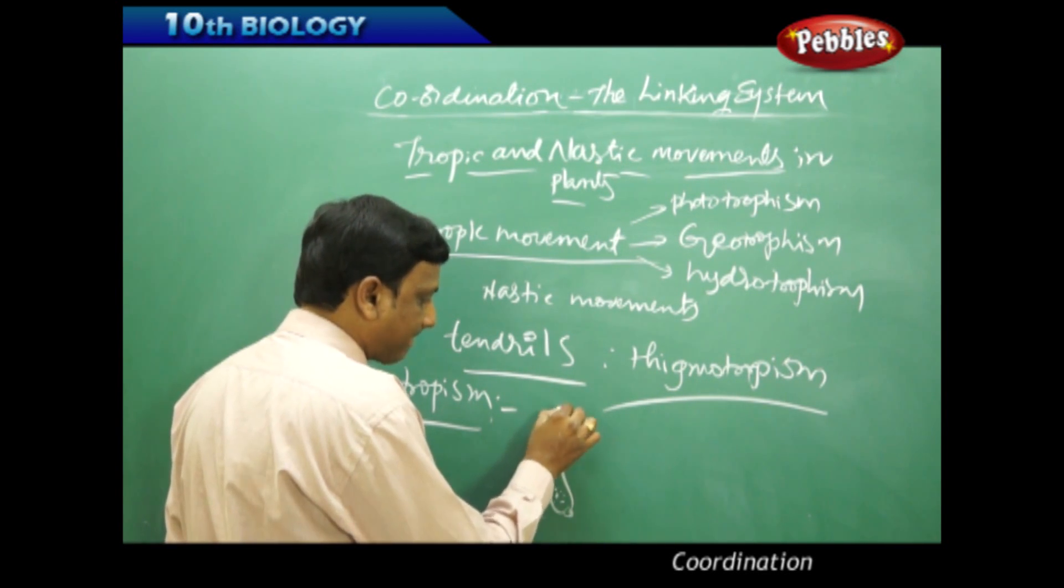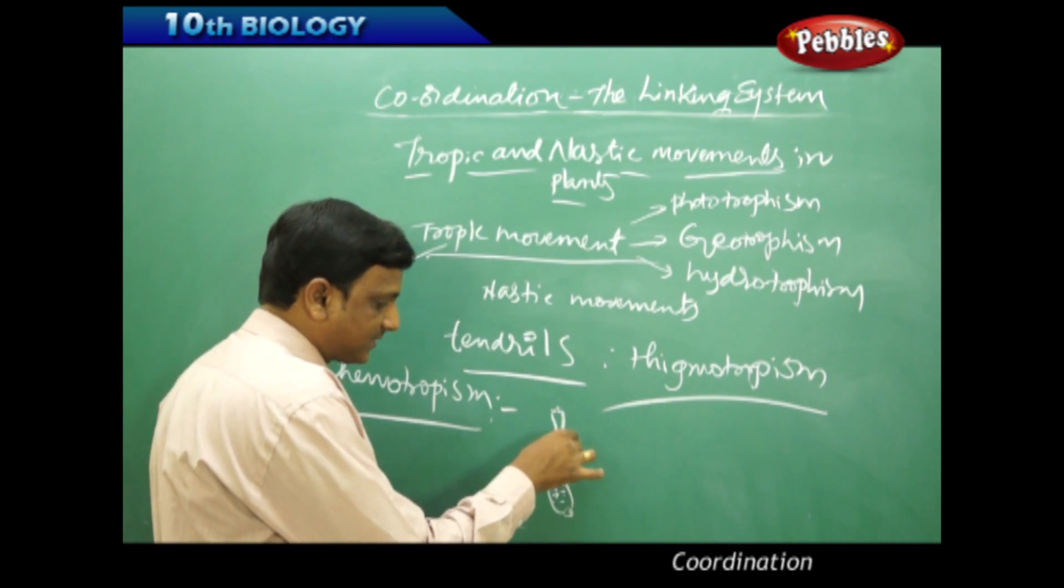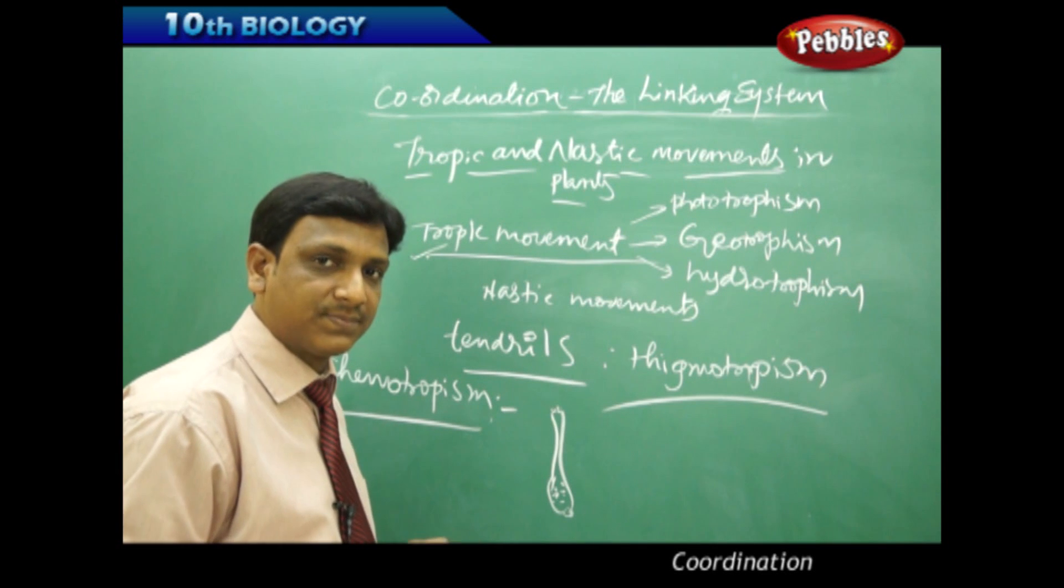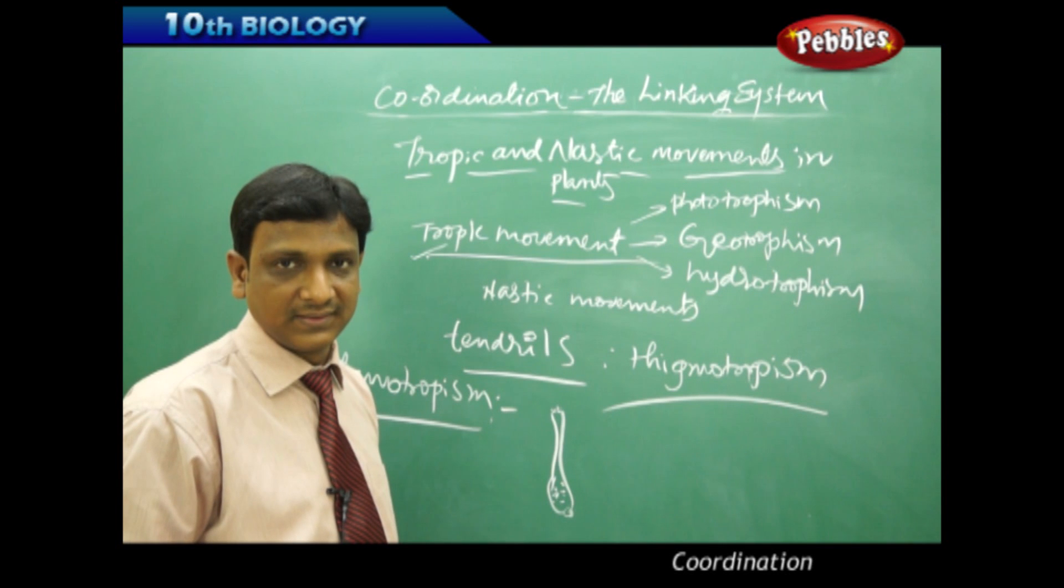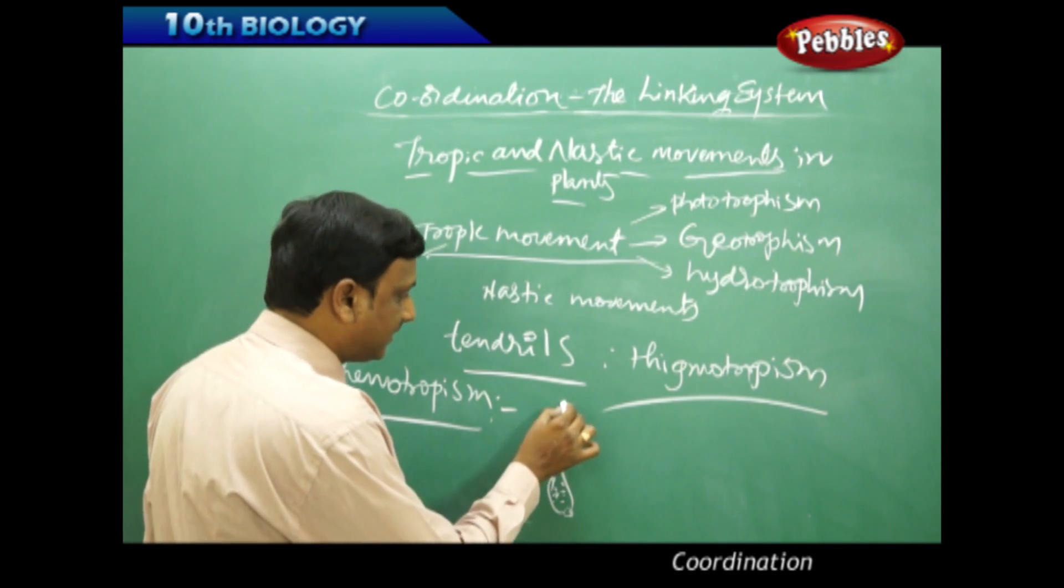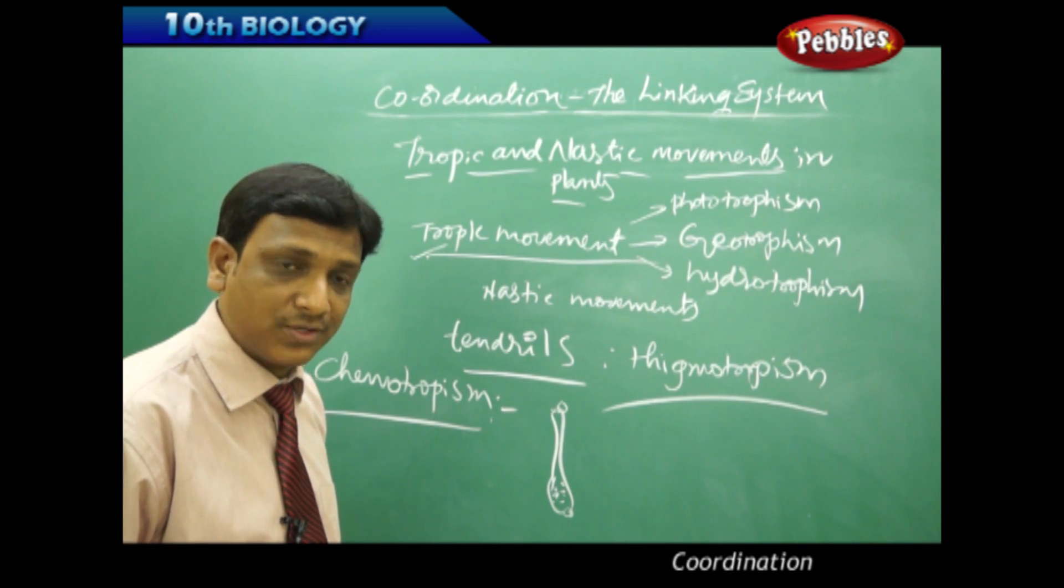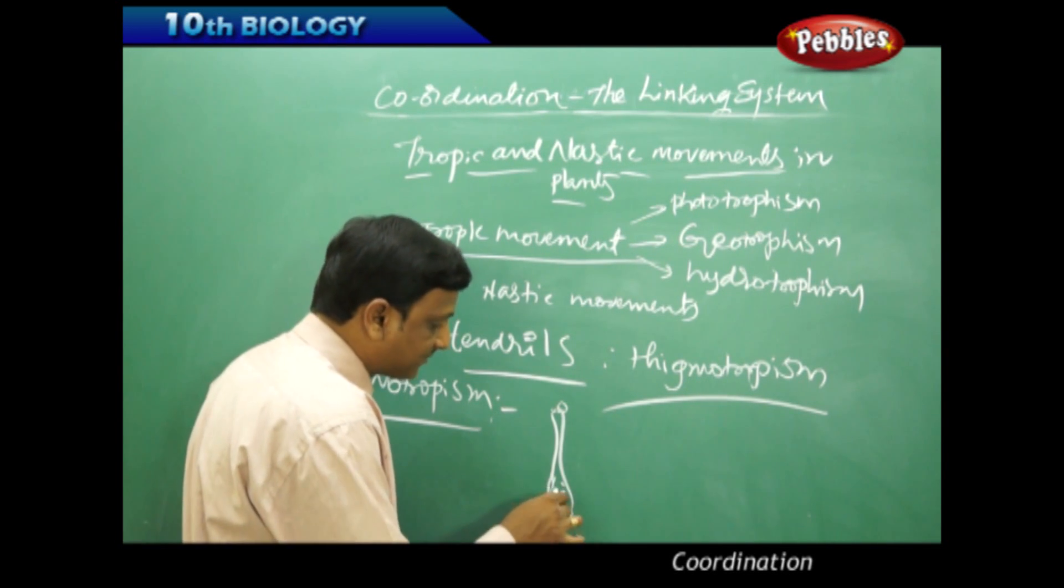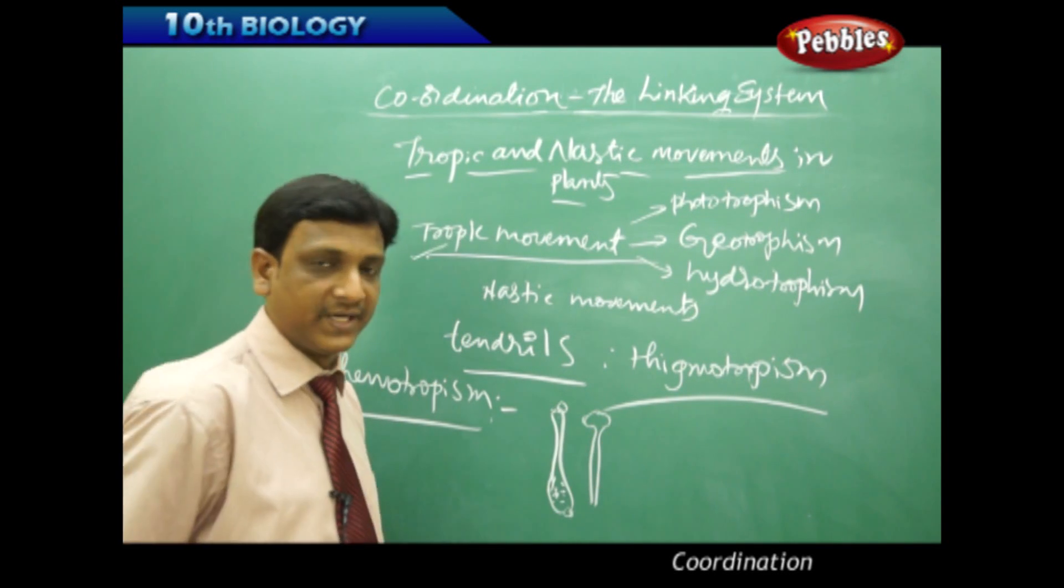Here on the stigma, this is the carpel. The carpel has stigma, style, and ovary. This part is sweet, it has some sweet sugary substances to attract insects. When the insect comes here, it drops the pollen grain. The pollen grain, when it drops here, because of the chemical substances present in it, produces a pollen tube into the ovary.